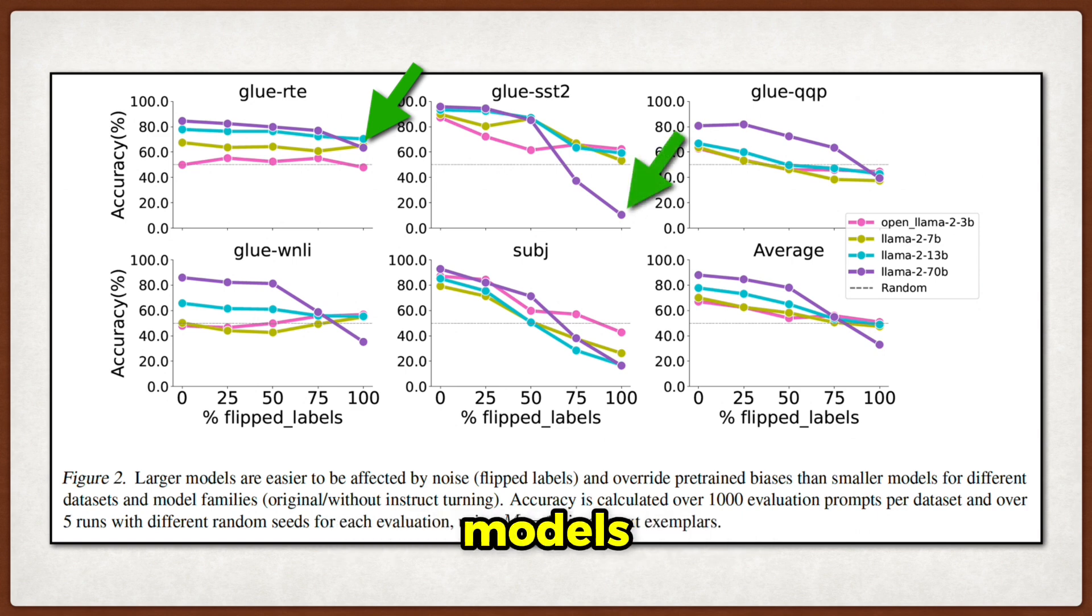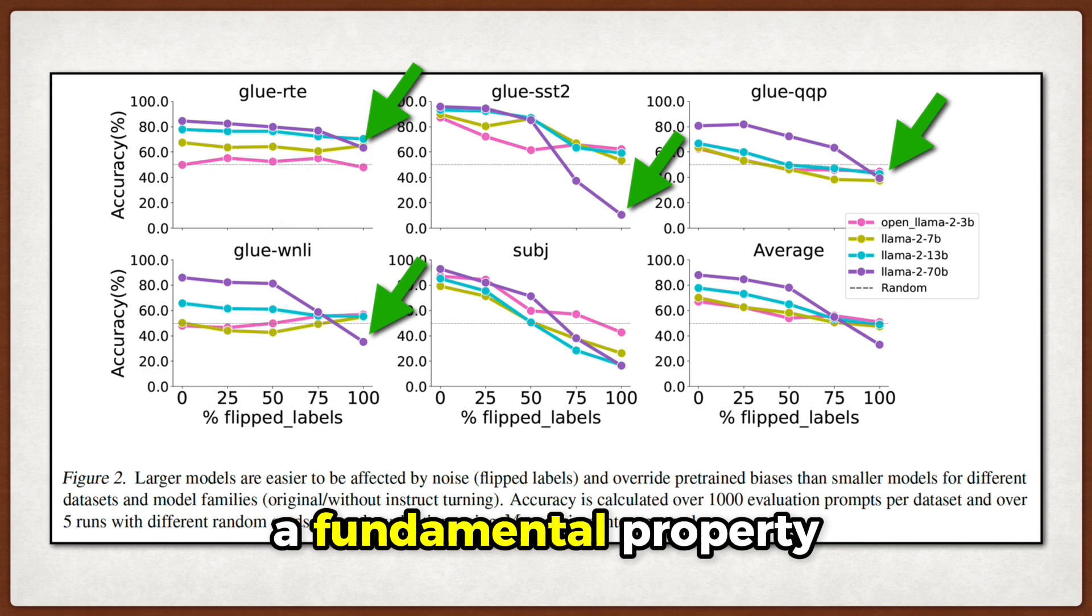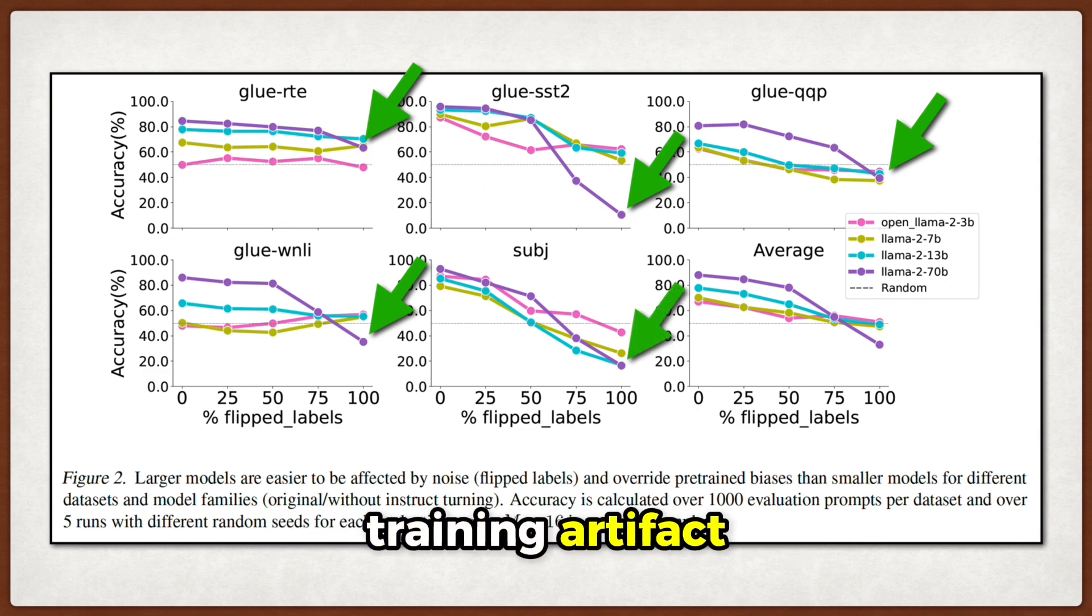This happens for both base models and instruction-tuned versions, suggesting this is a fundamental property of scale rather than a training artifact.